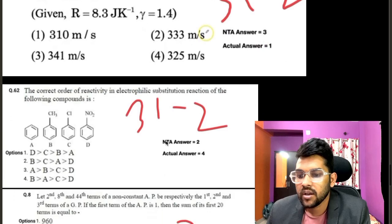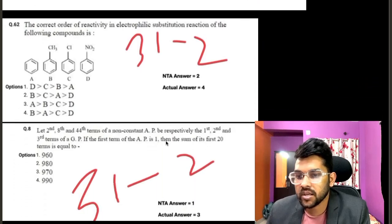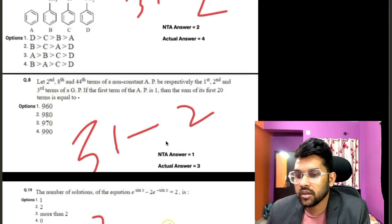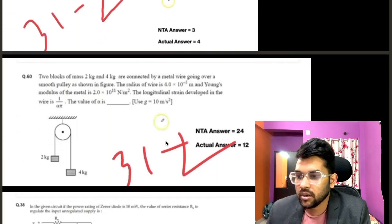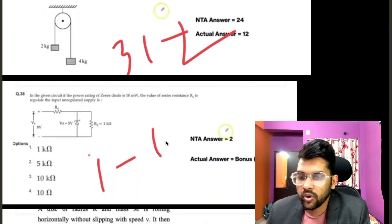Next again error, that is NTA answer is 2, but actual answer will be 4. And again one error question, again one error, and one more error.